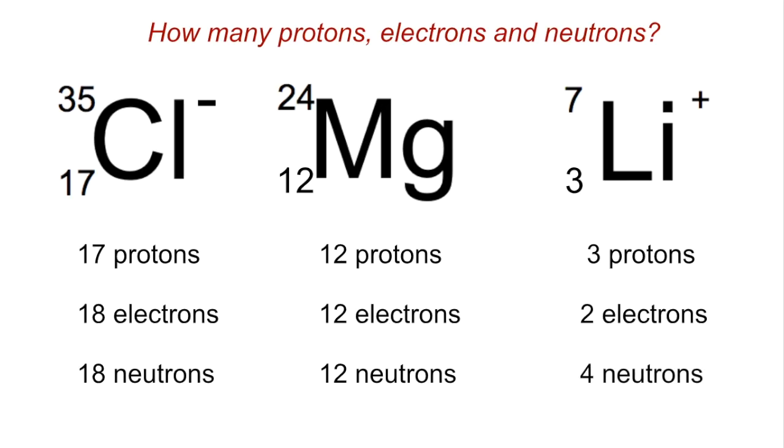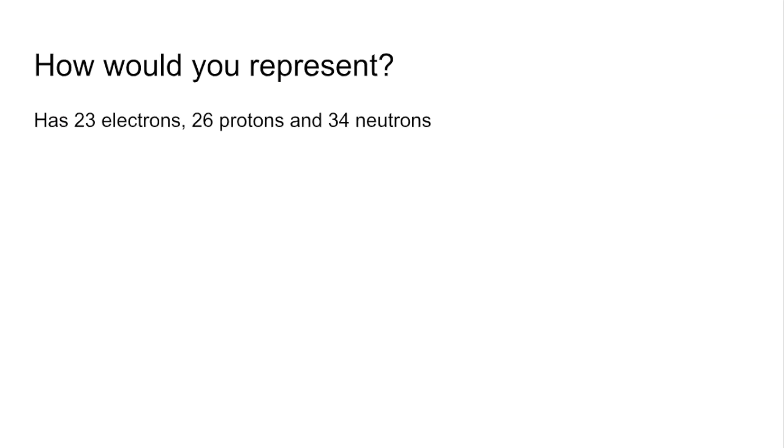The last one we're going to look at is this: How would you represent a particle that has 23 electrons, 26 protons and 34 neutrons? The obvious place to look at first is the number of protons, that's telling us that we've got iron.